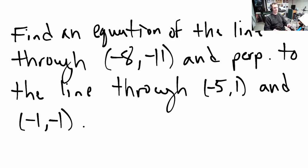So the exact problem statement is find an equation of the line through negative 8, negative 11, that's a point, and perpendicular to the line through negative 5, 1, and negative 1, negative 1.